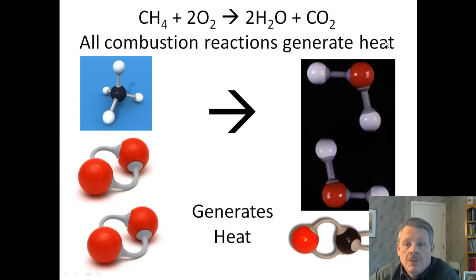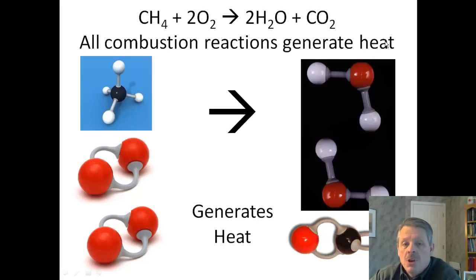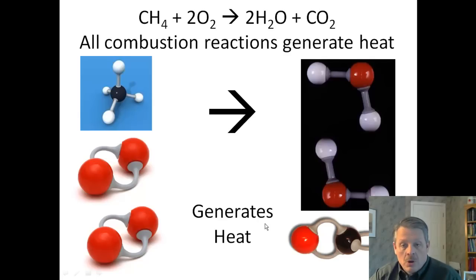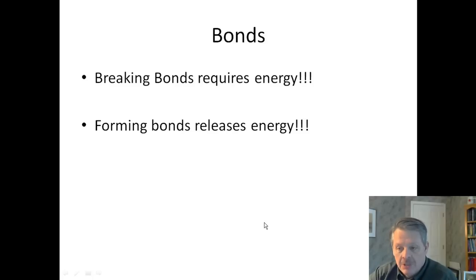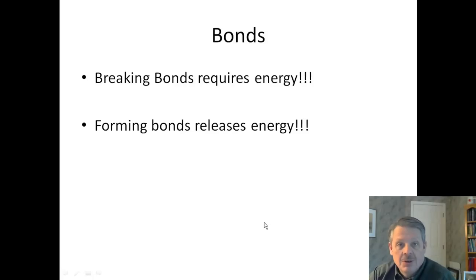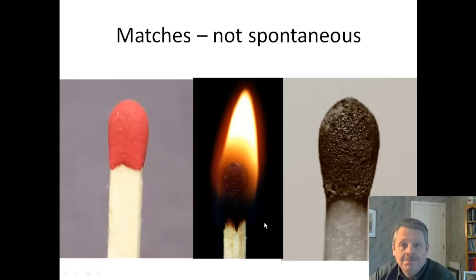All combustion reactions generate heat. So as we go from left to right — as we take our methane gas and oxygen, break it apart, and form water and carbon dioxide — we are generating heat. These are called exothermic reactions. Breaking bonds requires energy; forming bonds releases energy. By the way, if you watch the Bergman and Sam's podcast, they say it backwards, so it's very important you get this right.